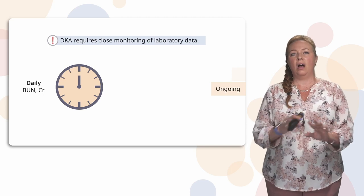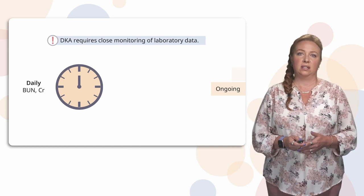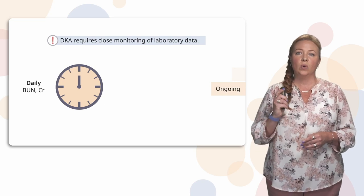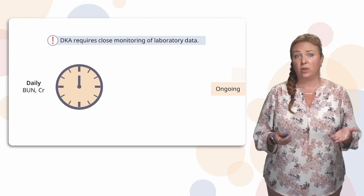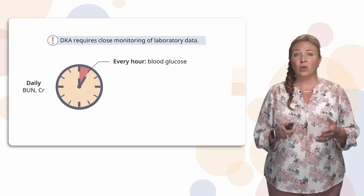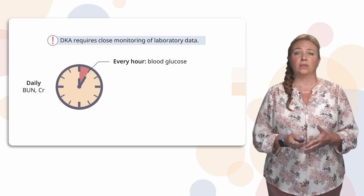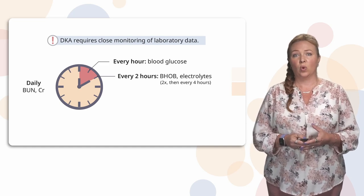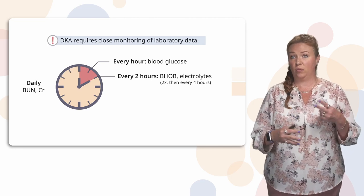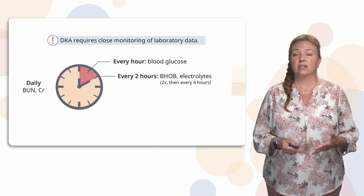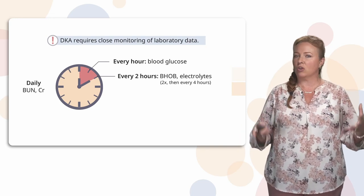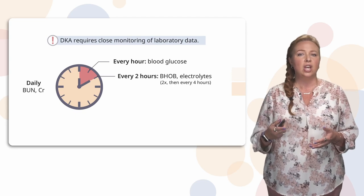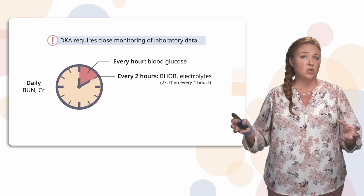We'll do ongoing laboratory monitoring while the patient is in DKA — it really requires close monitoring of these values. Daily, we look at those dehydration labs: BUN and creatinine. Every hour, we check blood glucose. Every two hours for initial DKA treatment, we check beta-hydroxybutyrate — the blood ketone level — and electrolytes, because those electrolytes are fluctuating. We check those every two hours for at least two checks, then may space out to every four hours.